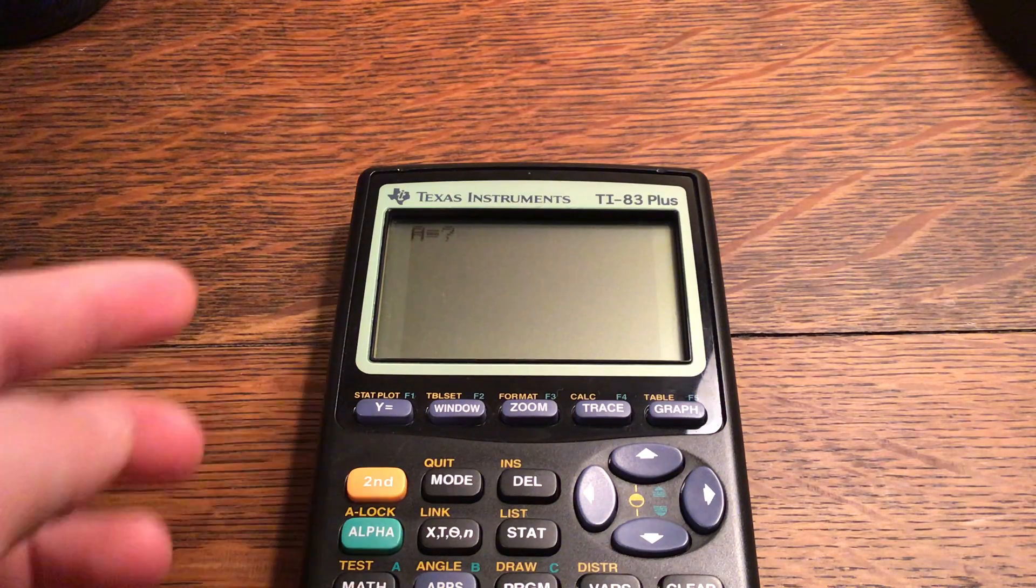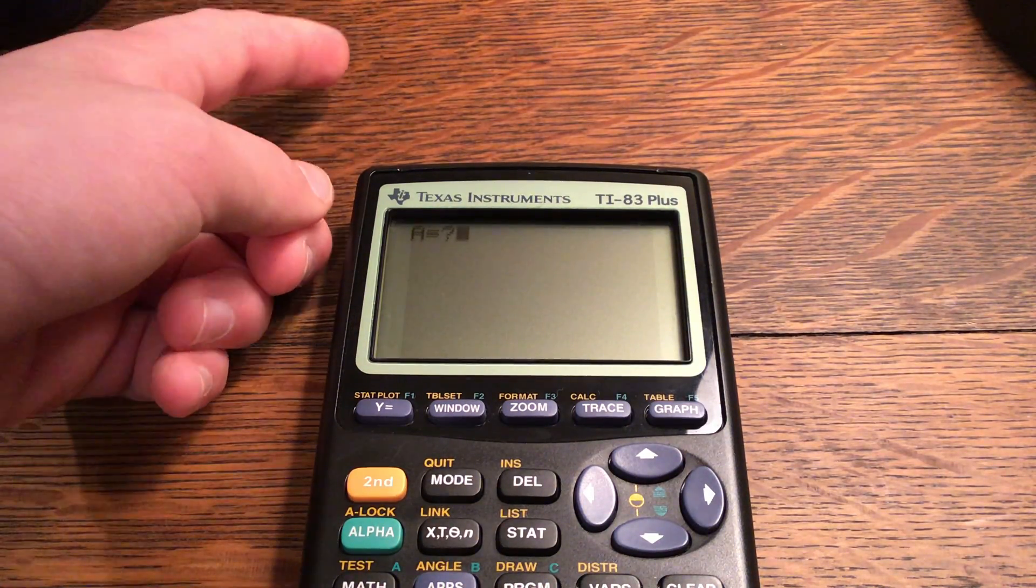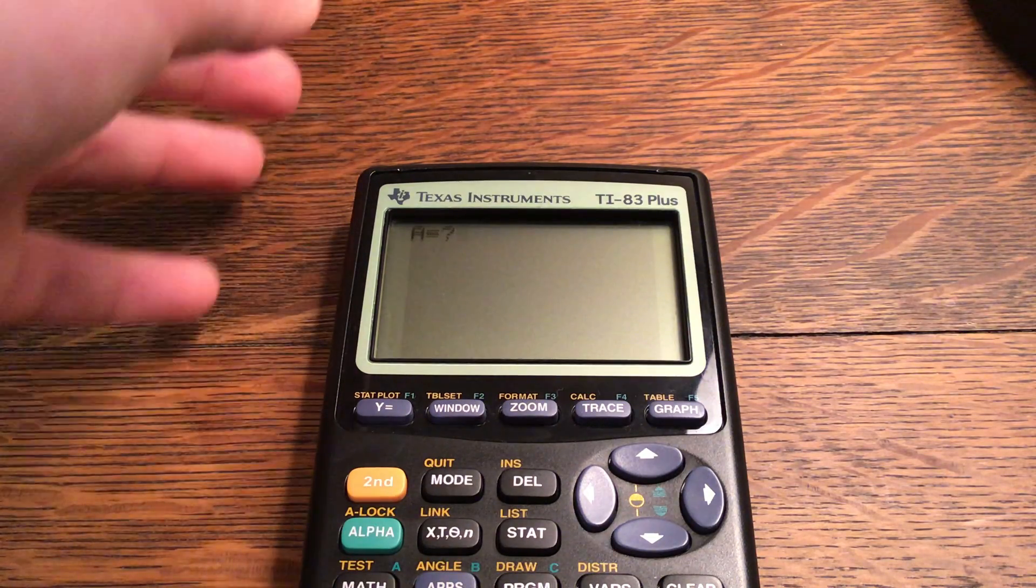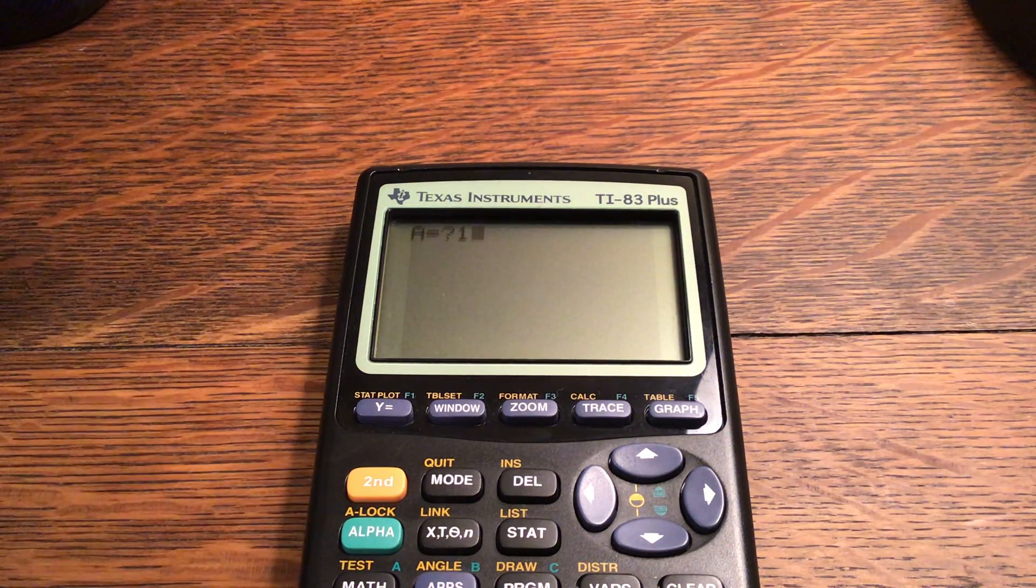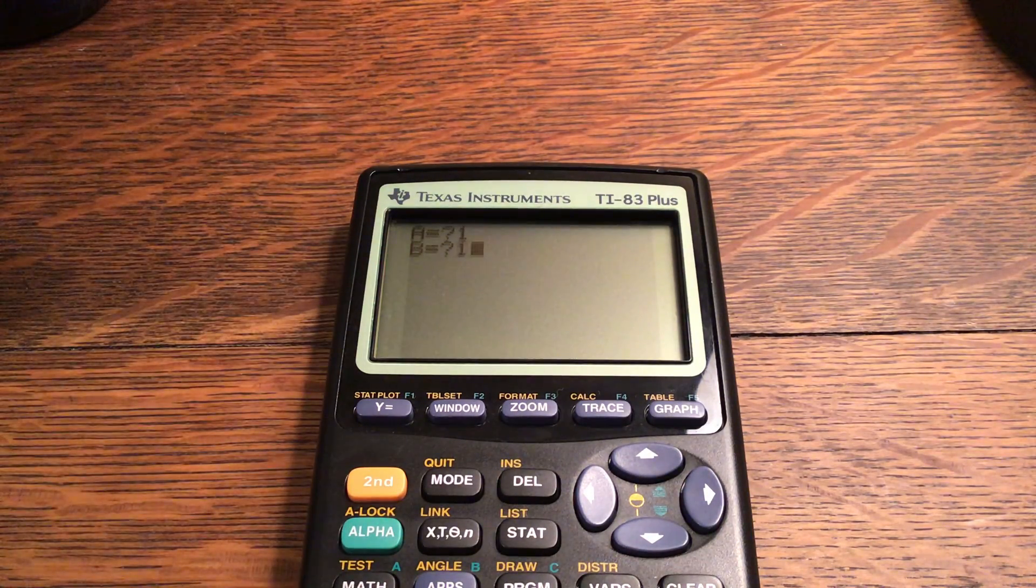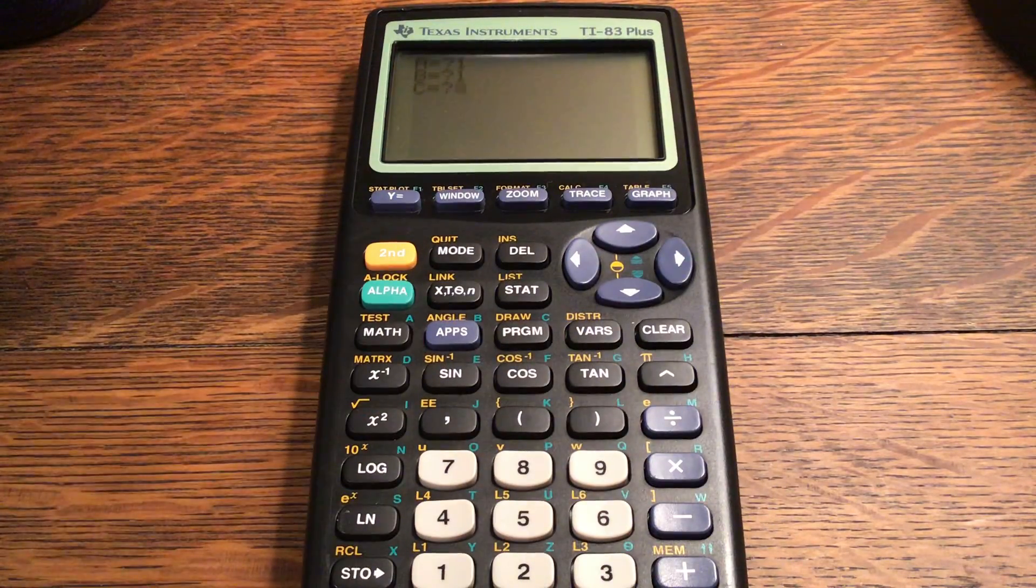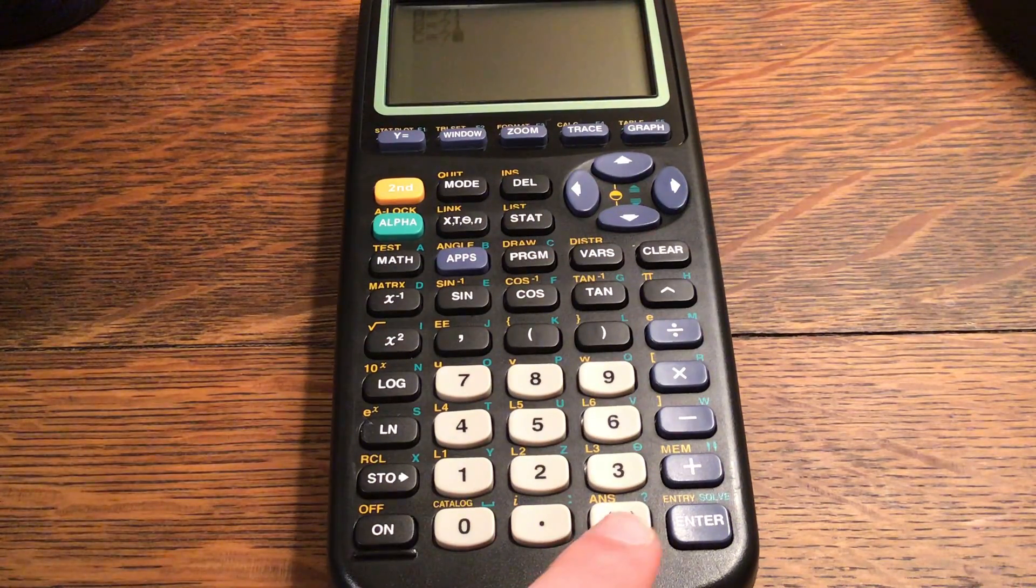The a number, which is the number in front of the x squared, there is no number in front of the x squared, but it is technically being multiplied by 1. The same is true for x. And then the minus 12 at the end.